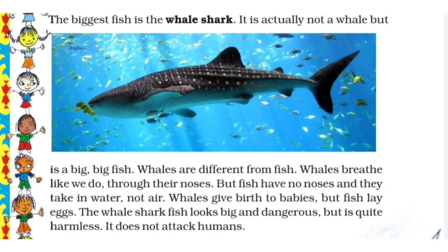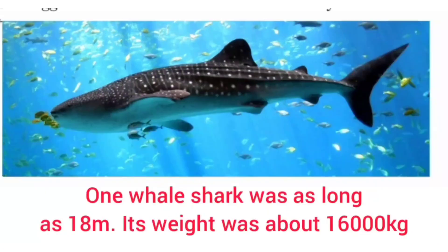Let's understand what is a whale shark. This is the picture of the whale shark which you can see here. The biggest fish is the whale shark — it is actually not a whale but is a big, big fish. Whales are different from fish: whales breathe through their noses like we do, and whales give birth to babies but fish lay eggs. The whale shark looks big and dangerous but is quite harmless — it does not attack humans. One whale shark was 18 m long and its weight was about 16,000 kg.